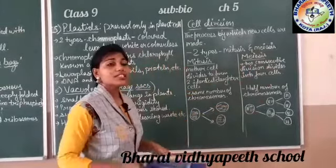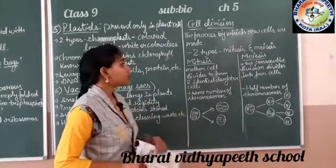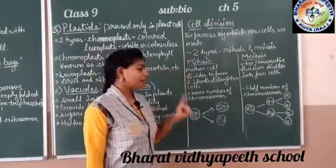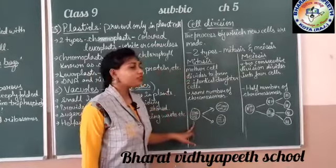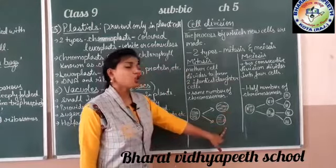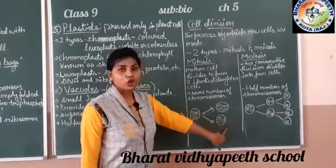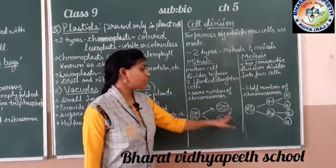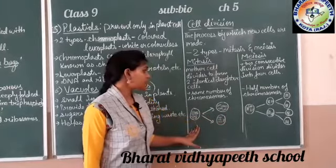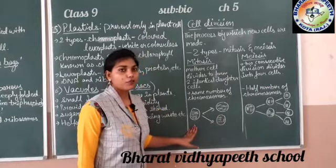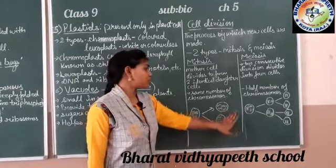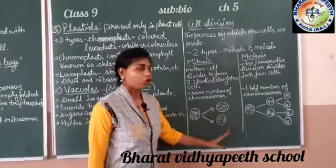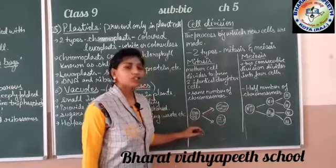Mitosis consists of a mother cell as the main cell, which further gets divided into two identical daughter cells. The mother cell divides and separates into two equal parts. Each daughter cell contains the same number of chromosomes — if the mother cell contains four chromosomes, then each daughter cell also consists of four chromosomes.